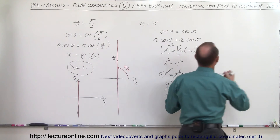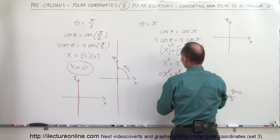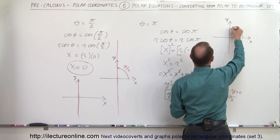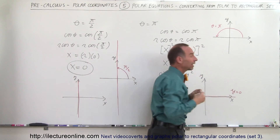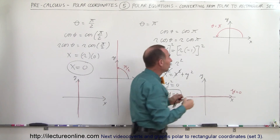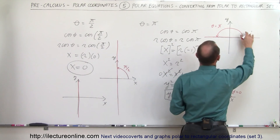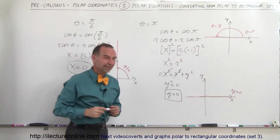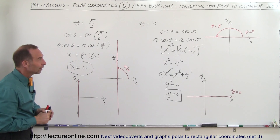Now let's take a look at how we would graph theta equals pi in polar coordinates. Let's draw the xy-axis for reference — that's the y-axis, that's the x-axis. We find an angle of pi relative to the positive x-axis, starting from here and going all the way out to here — that is equal to pi. Since r is not specified, r can be any value in the positive or negative direction, which means it would be this line right here — the exact same graph as y equals 0. So theta equals pi and y equals 0 are the same graph, just with very different equations — one in polar coordinates and the other in rectangular coordinates.